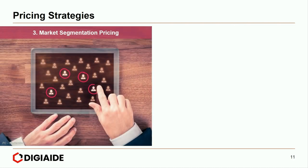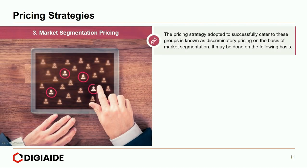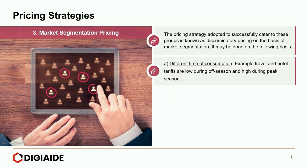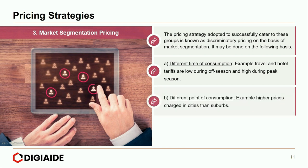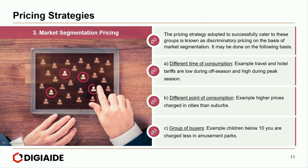Next, market segmentation pricing — also known as discriminatory pricing on the basis of market segmentation. This may be done on the following basis: different time of consumption, for example travel and hospitality tariffs are low during off-season and high during peak season like Christmas. Different point of consumption — higher prices in cities than suburbs. And group of buyers — for example children below 10 years of age are charged less in amusement parks such as Disneyland.